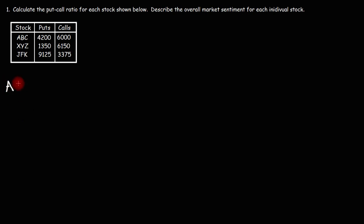Starting with stock ABC, the put-call ratio is going to be equal to the volume of the put options divided by the volume of the call options. So for ABC, we have a put volume of 4,200 and the call volume is 6,000. If we divide those two numbers, we'll get a put-call ratio of 0.7.